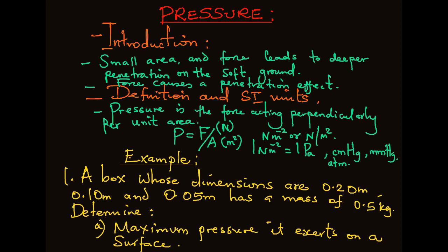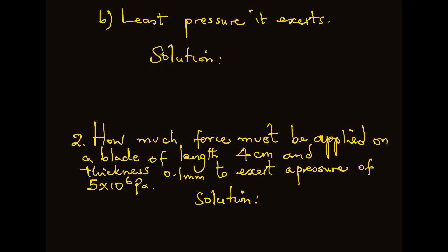Let us now look at an example. A box whose dimensions are 0.2 meters and 0.1 meters and 0.05 meters has a mass of 0.5 kg. Determine the maximum pressure it exerts on a surface and the least pressure it exerts.